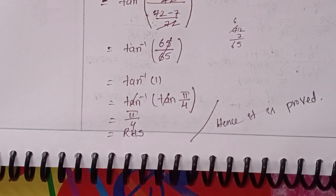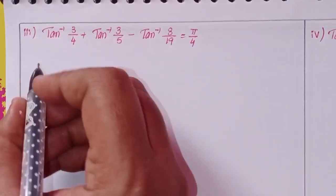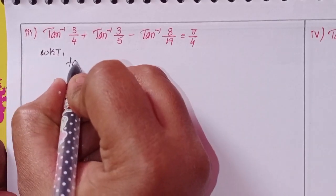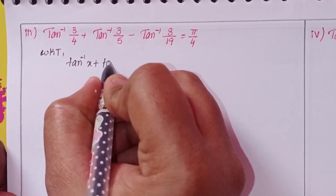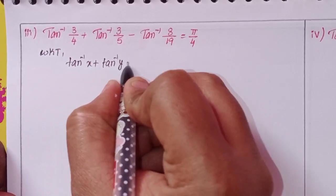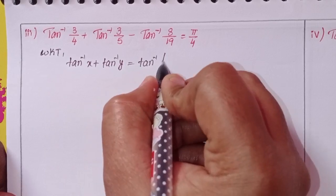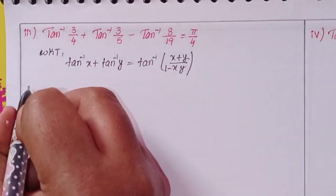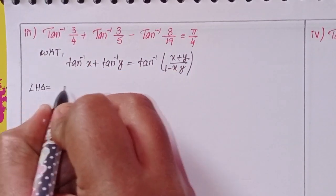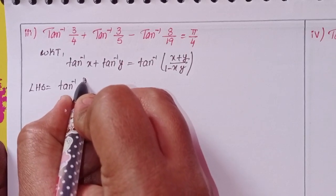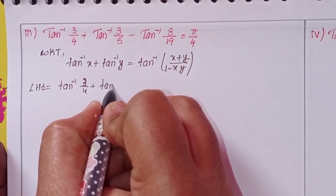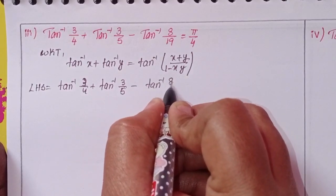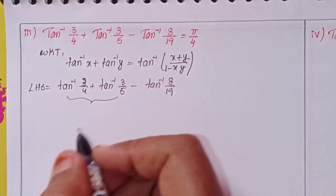Next, third one. Same formula applies. We know that tan inverse x plus tan inverse y equals tan inverse of x plus y by 1 minus xy. LHS: tan inverse 3 by 4 plus tan inverse 3 by 5 minus tan inverse 8 by 19. For the first two terms, apply this formula.